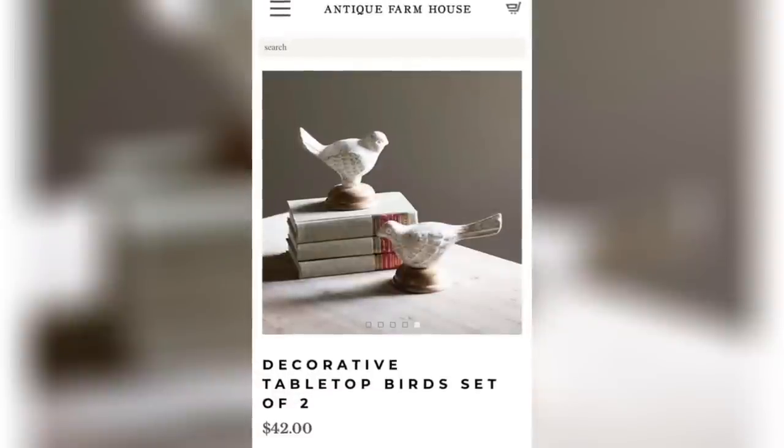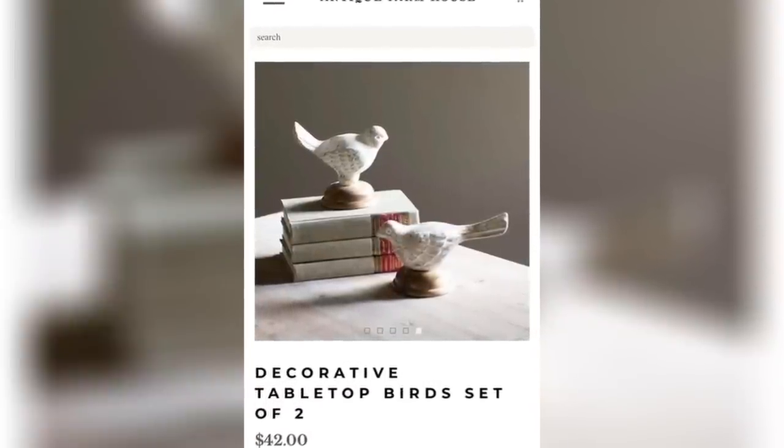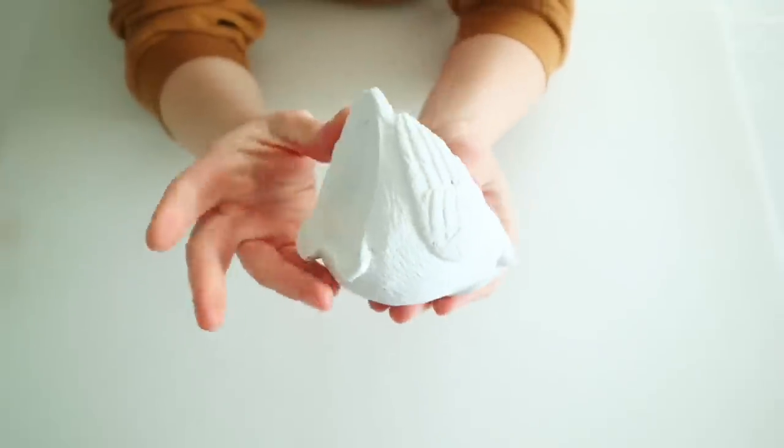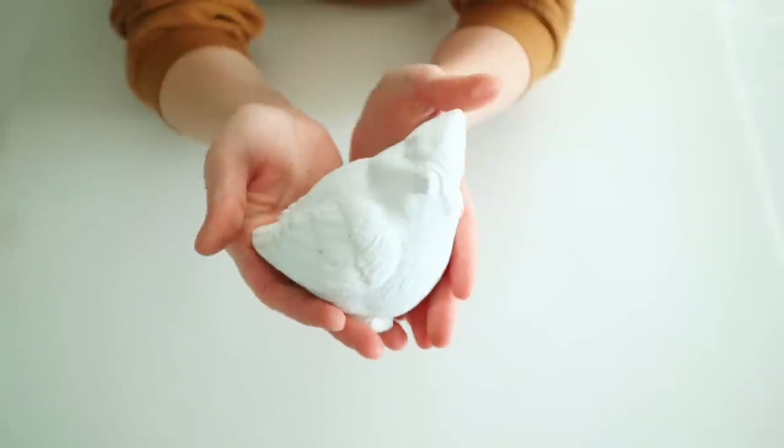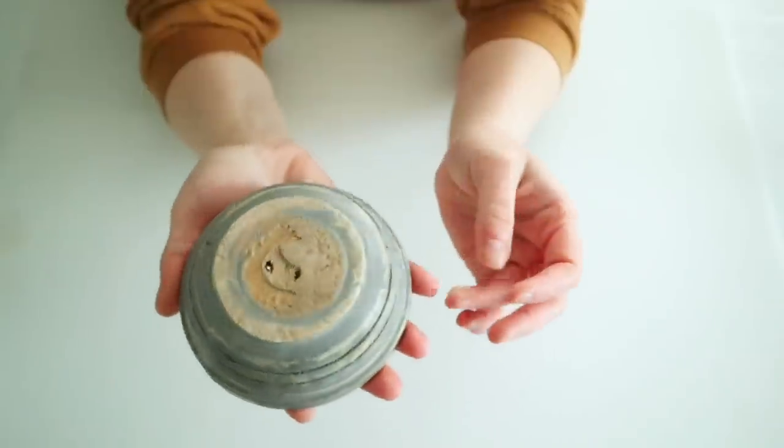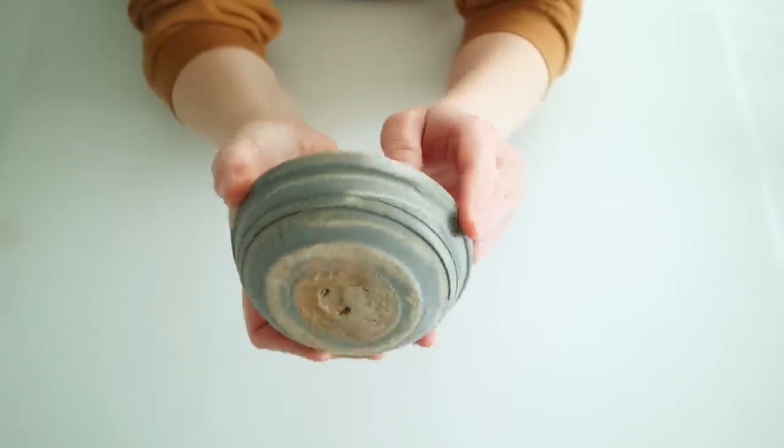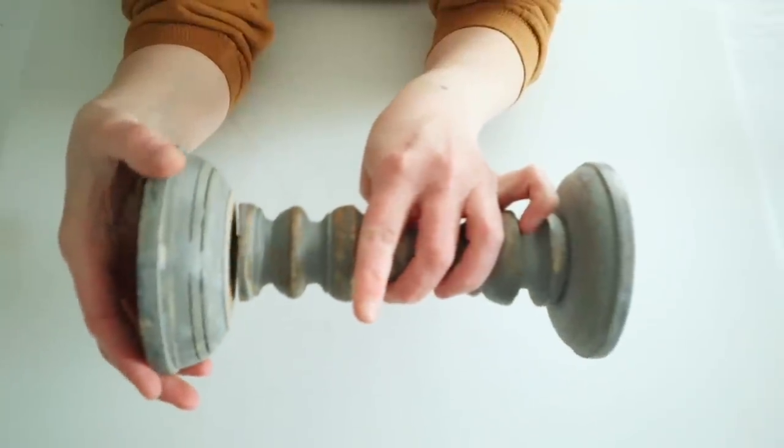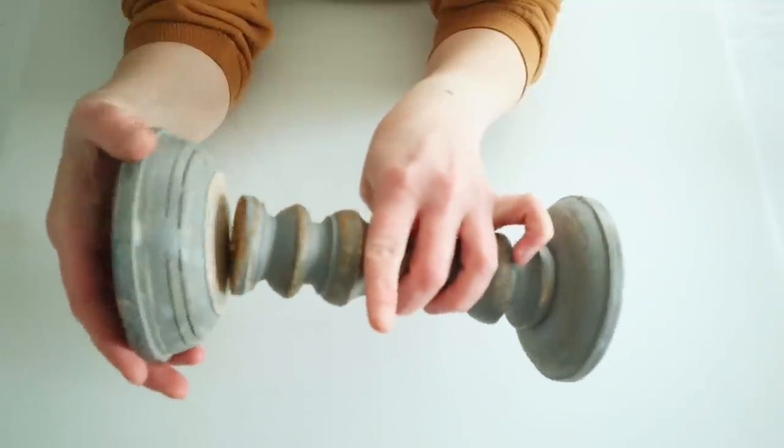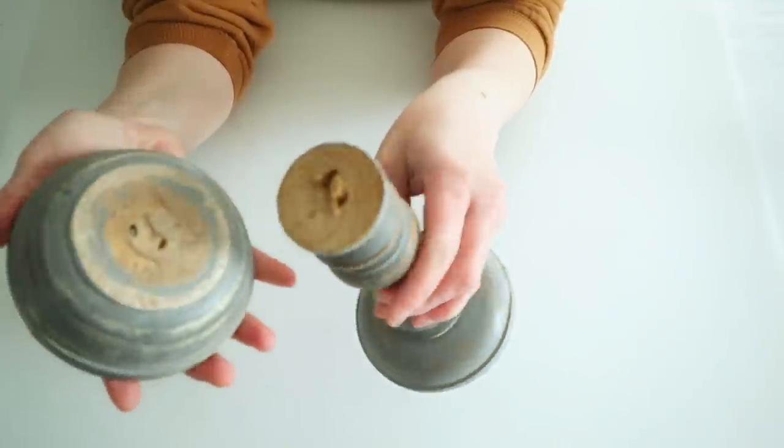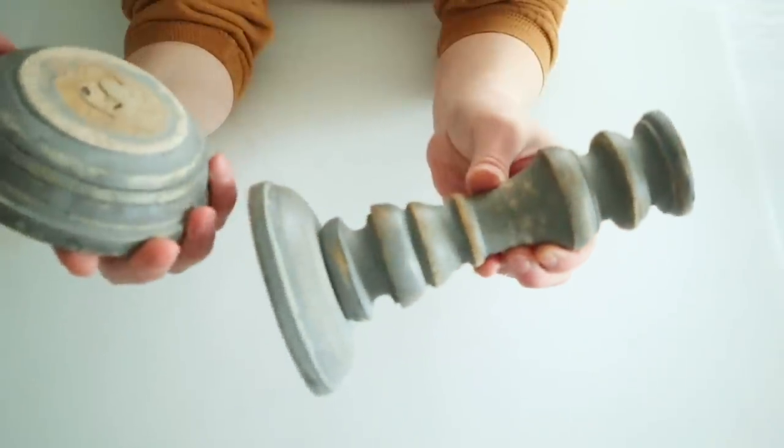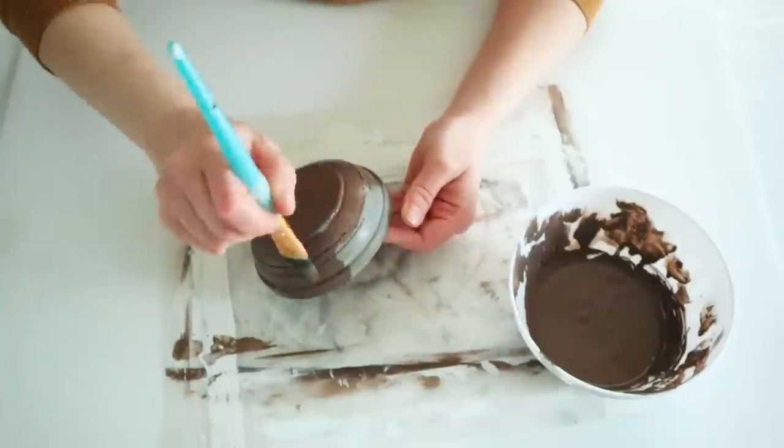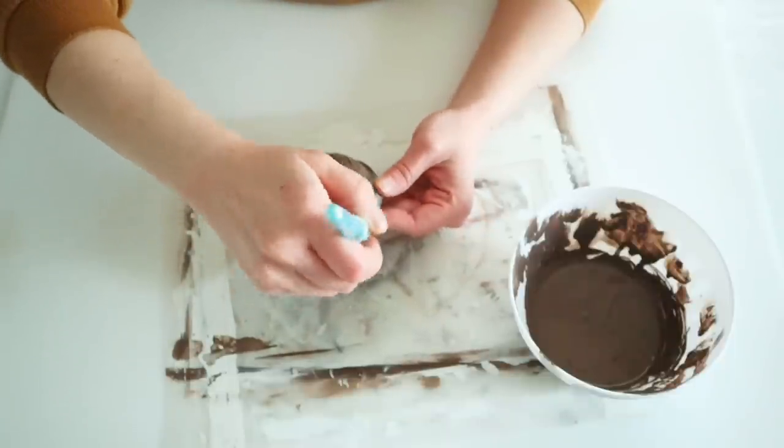This next project is inspired by these tabletop birds from Antique Farmhouse. Now I just picked up this cute little birdie from my local thrift store, and it was actually already painted white, which was perfect for this project. And for the base, I actually found a candlestick at my local thrift store, and it was kind of already broken. So I went ahead and just used my miter box saw to cut that bottom piece off. Like I said, it was already kind of coming apart as it was, and so I thought this would be really good for this project.